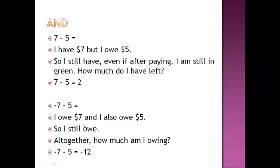Negative seven minus five means I owe someone seven dollars and I also owe another person five dollars. Let's say I owe Wells Fargo Bank seven dollars and I owe my credit union five dollars. I still owe both banks — altogether, how much am I owing? Twelve dollars. That's why the answer is negative twelve.